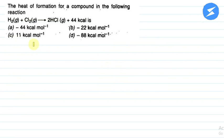Hello everyone, I am your teacher for this question. The question is: the heat of formation for a compound in the following reaction H2 gas plus Cl2 gas gives 2HCl gas plus 44 kilocalorie. The options are: A minus 44 kilocalorie per mol, B minus 22 kilocalorie per mol, C 11 kilocalorie per mol, D minus 88 kilocalorie per mol.